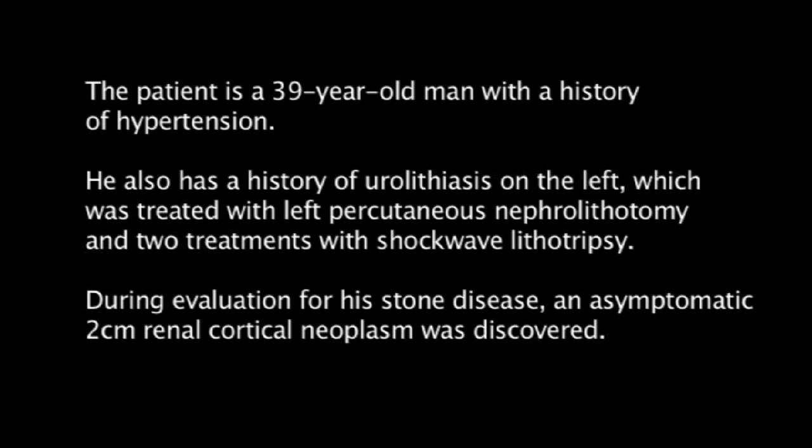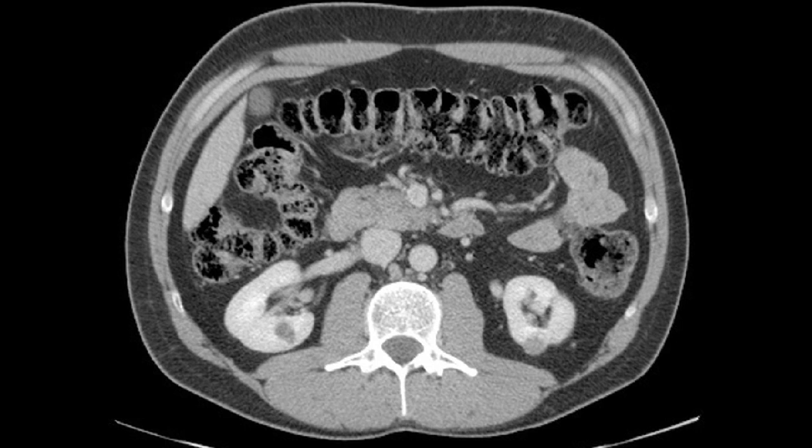The patient is a 39-year-old man with a history of hypertension. He also has a history of urolithiasis on the left side, which was treated with percutaneous nephrolithotomy and two treatments of shockwave lithotripsy. During evaluation for stone disease, an asymptomatic 2 cm renal cortical neoplasm was discovered. The patient's small renal neoplasm is well-suited for percutaneous cryoablation as it is located very posteriorly and not near any critical structures such as the colon or ureter. On the contralateral side, a simple cyst is noted.